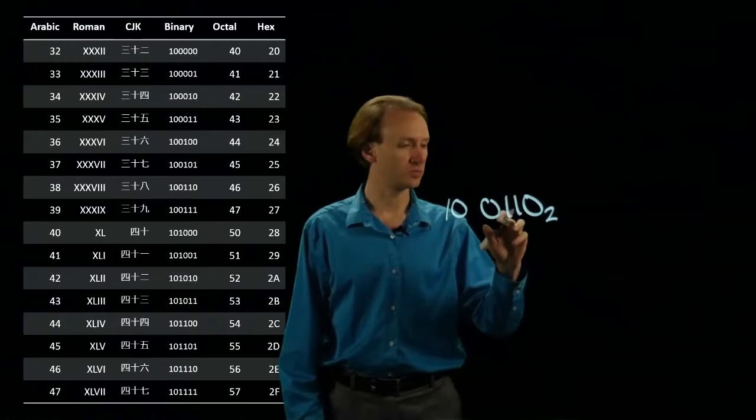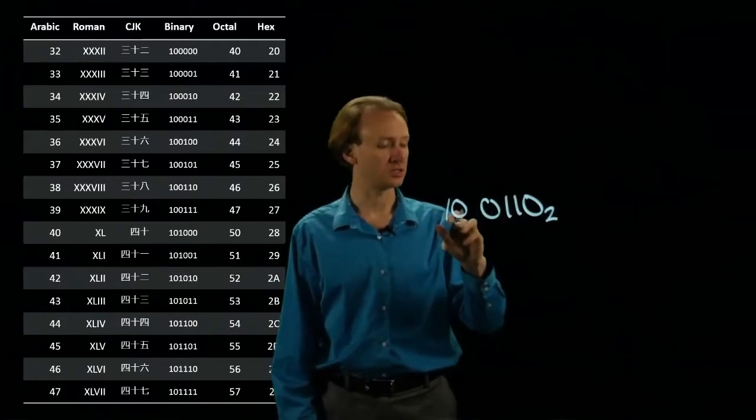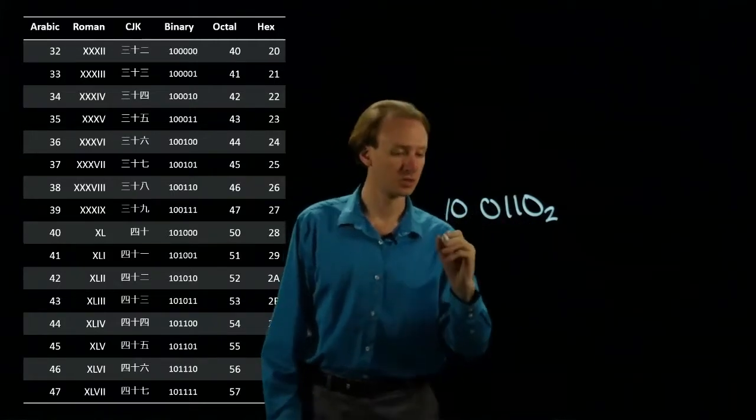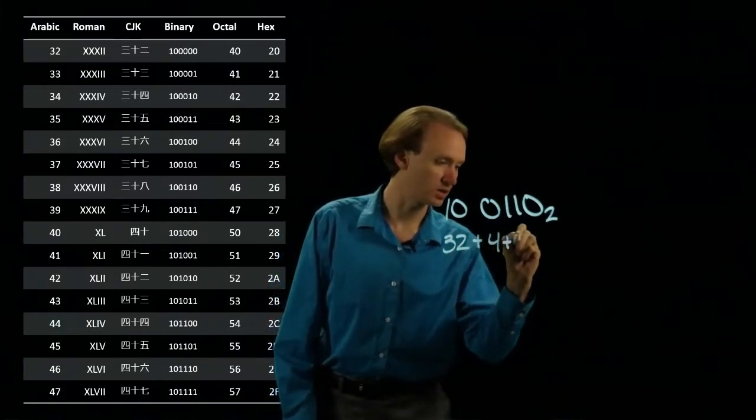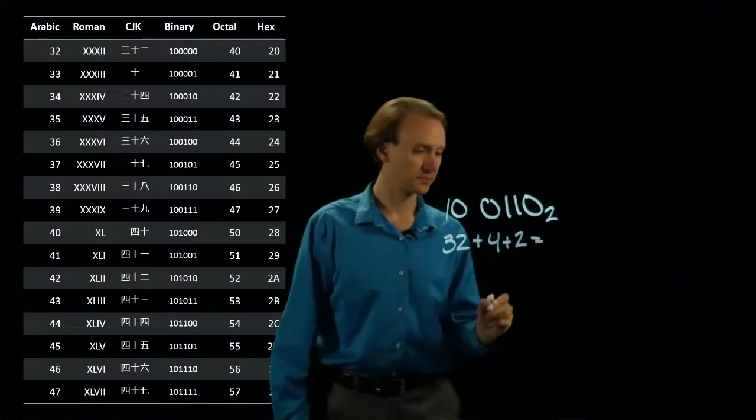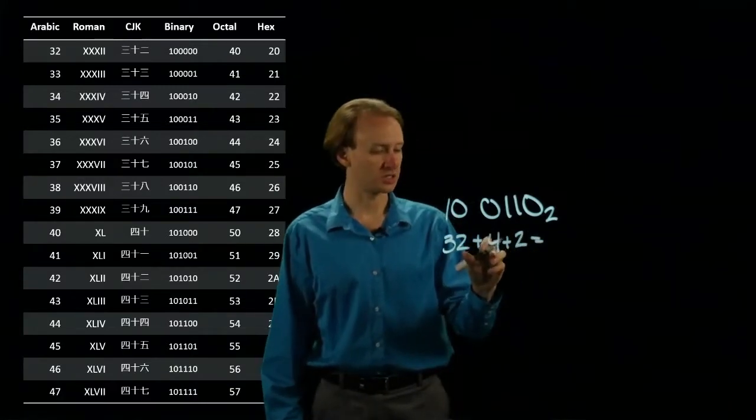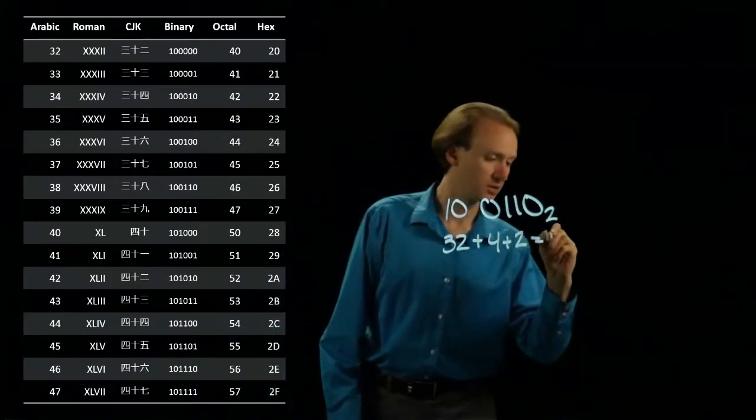So I know I have 2 plus 4, no 8s, no 16s, and a 32. So, 32 plus 4 plus 2. 2 plus 4 is 6, plus 32 gives me 38.